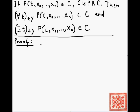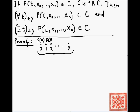Let's prove this. Consider the range of t: t ranges from 0 up to y, so t takes values 0, 1, 2, ..., y. We then have the predicate evaluated at each value: P(0, ...), P(1, ...), P(2, ...), all the way up to P(y, ...).